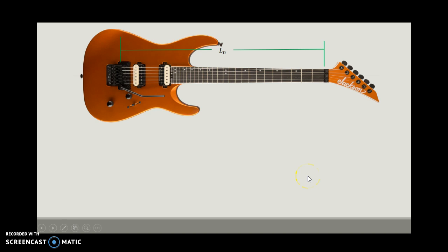So we have our scale length, which we're calling L sub zero, the length of the string when it's in the zeroth fret, when you're not fretting it at all. And let's just suppose that we're interested in knowing where to place the 12th fret.